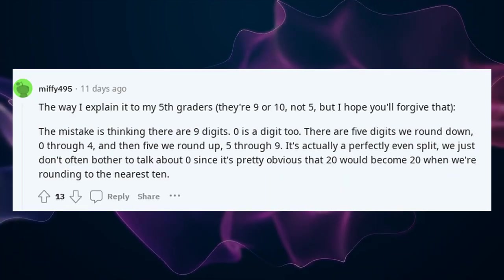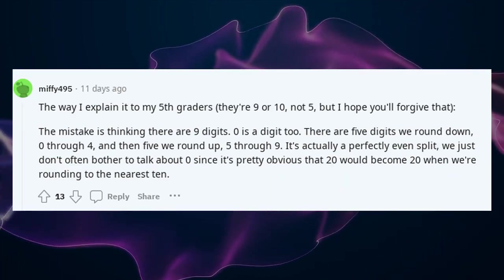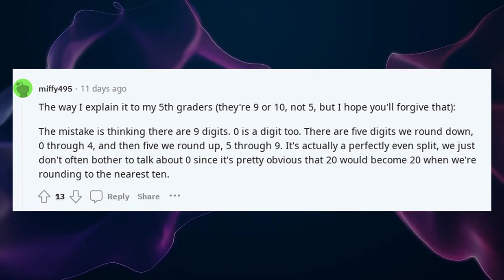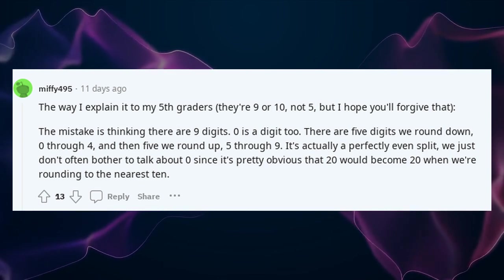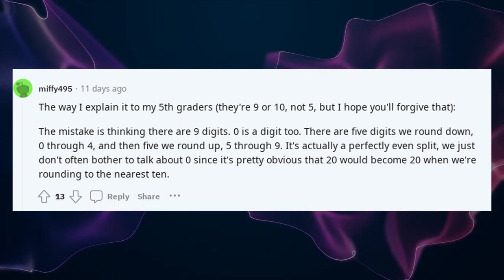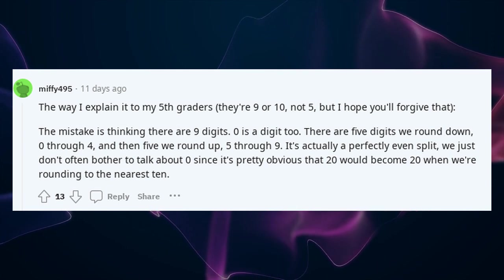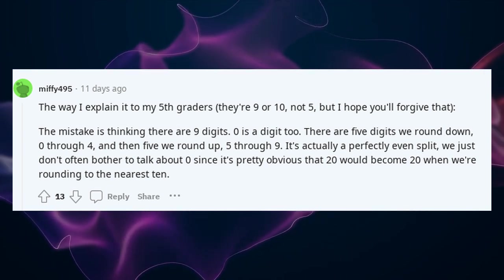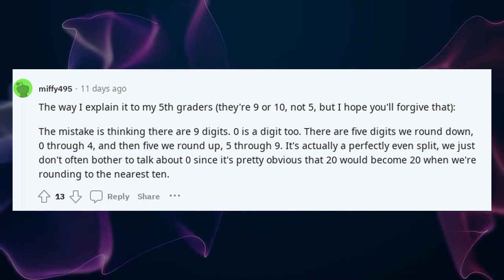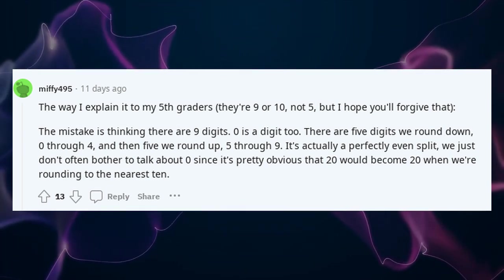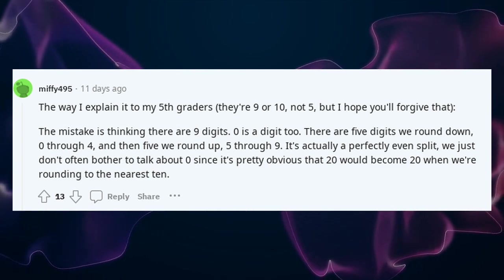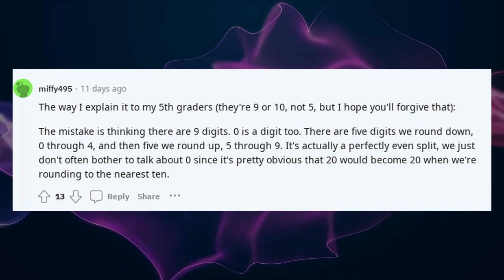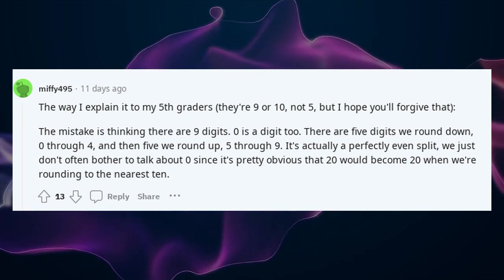The way I explain it to my 5th graders — they're 9 or 10, not 5, but I hope you'll forgive that. The mistake is thinking there are only 9 digits. 0 is a digit too. There are 5 digits we round down: 0 through 4, and 5 digits we round up: 5 through 9. It's actually a perfectly even split. We just don't often bother to talk about 0, since it's pretty obvious that 20 would become 20 when rounding to the nearest 10.